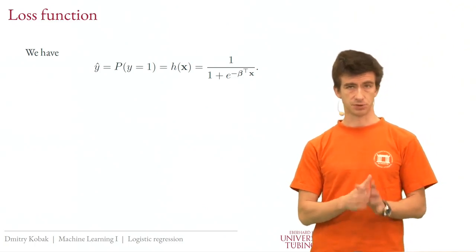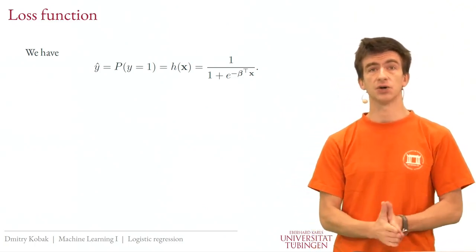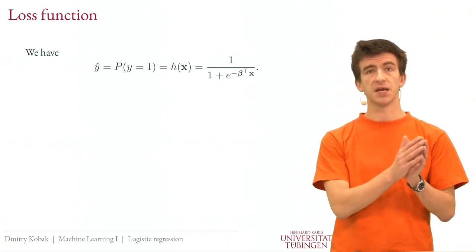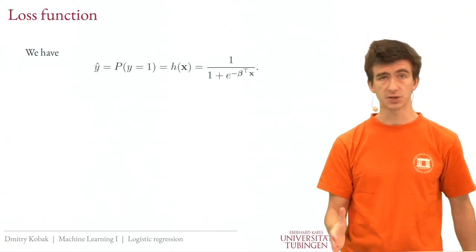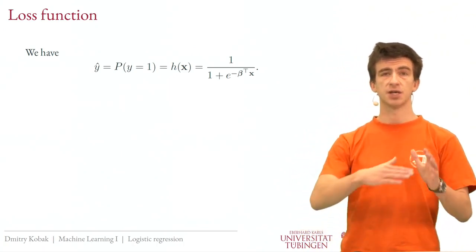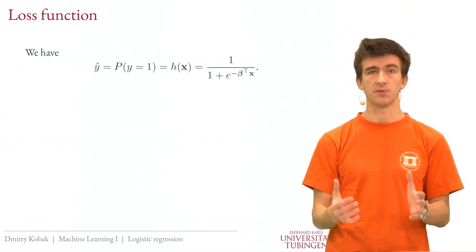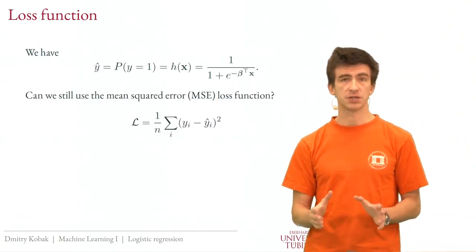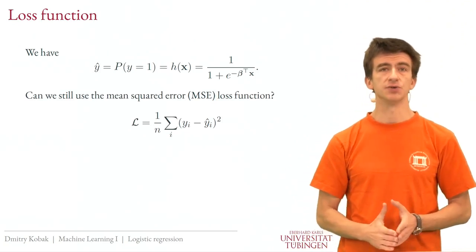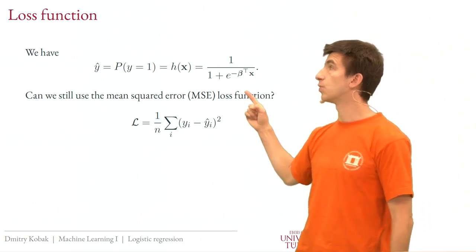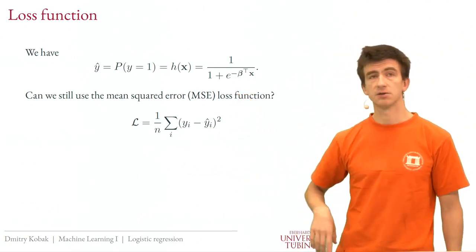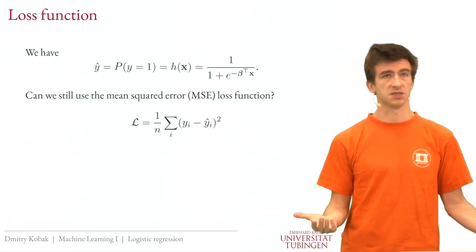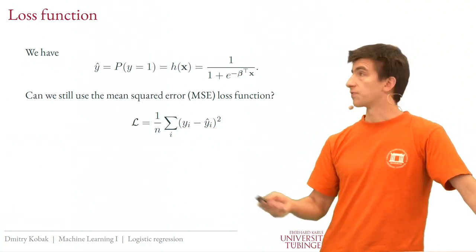Let's get back to setting up logistic regression, because we're not finished. We've discussed the prediction formula to obtain ŷ from x given parameters beta, but the missing ingredient is the loss function. How do we judge if a given sigmoid fits the data well? Why can't we just keep using the mean squared error loss from linear regression? We could use this formula for ŷ and still use MSE — whenever y is 0, ŷ should be close to 0, and whenever y is 1, ŷ should be close to 1. It seems meaningful.